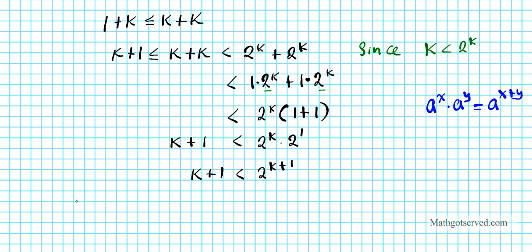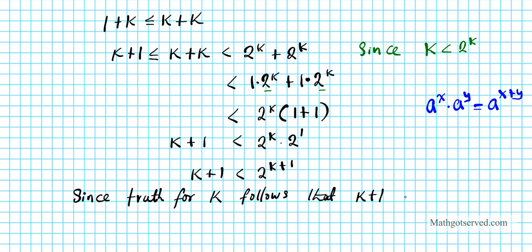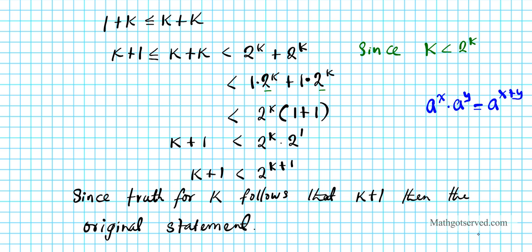In conclusion, since truth for k implies that k plus 1 is also true, the original statement is true for all positive integers. We just need a solid foundation — the base case — and then if for any arbitrary step we pick the next step will also be true, it creates a domino effect guaranteeing the statement holds for all positive integers. We conclude the statement is true by mathematical induction, which completes the proof.